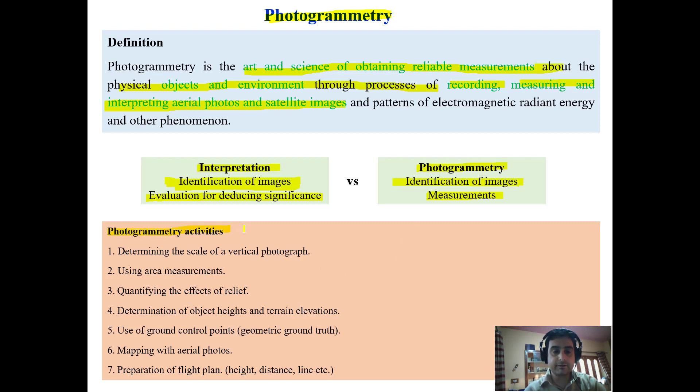There are different photogrammetry activities ranging from determining the scale of a vertical photograph, using area measurements, quantifying relief, determining object and terrain elevations, use of ground control points, geometric ground truth, mapping with aerial photos, and preparation of flight plans.